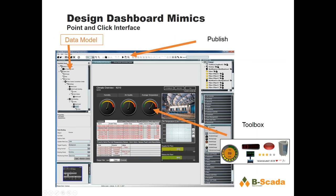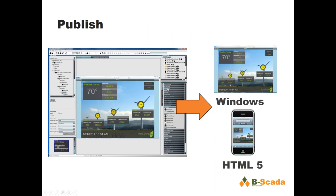This is the mimic designer. In the toolbox, we have hundreds of different types of controls developed over the last several years. You drag these controls out on the design surface, pick a property in your data model, hit publish, and you have live data. It's that simple — anybody can make fantastic-looking front ends to their live data without writing a single line of code. Once you hit publish, those screens can be viewed in either a Windows thick client or on any HTML5-enabled device.